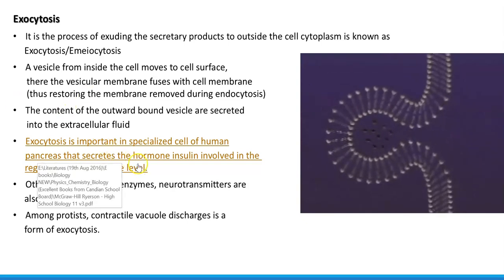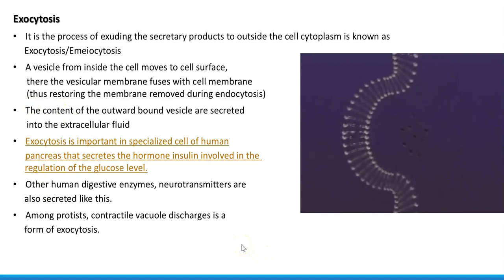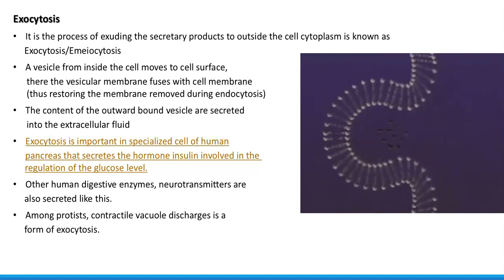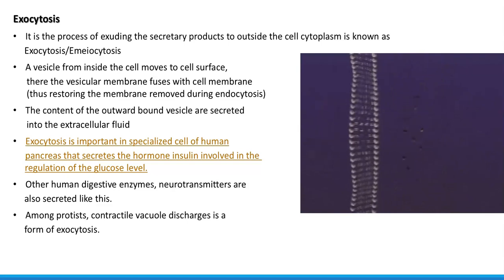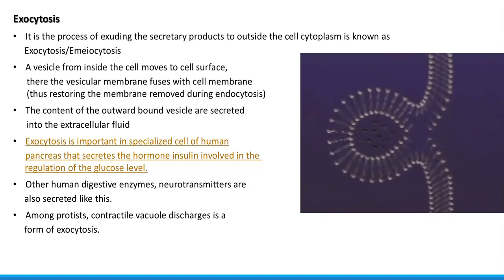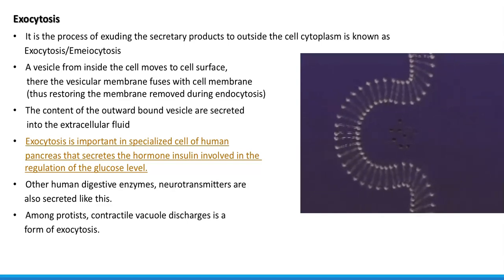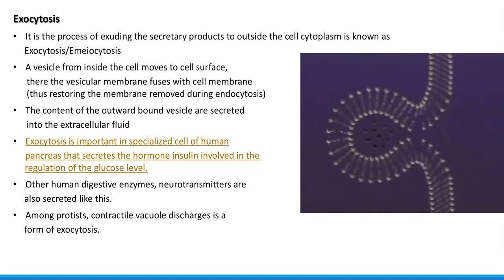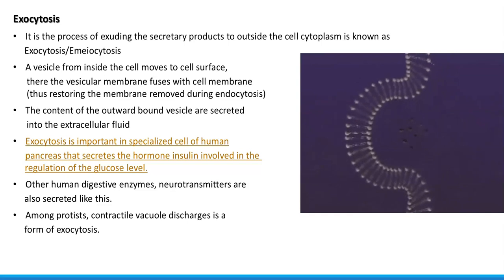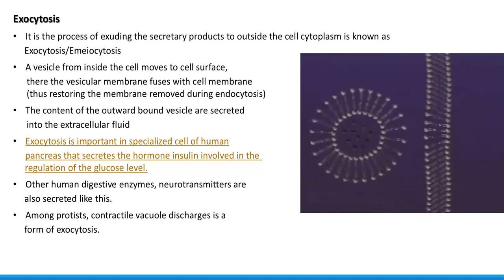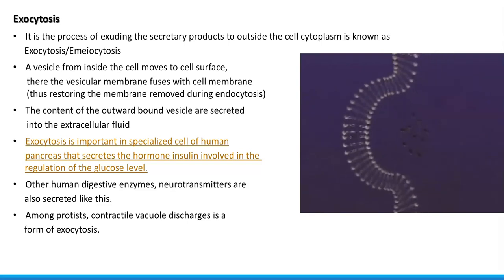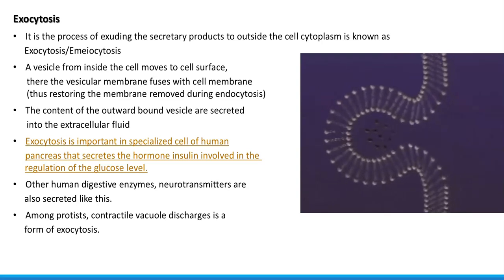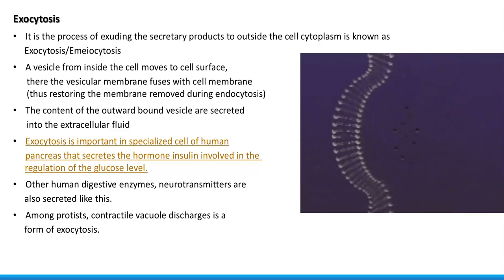Exocytosis is important in specialized cells of the human pancreas. The reason is that the pancreas is involved in the secretion of the human hormone insulin, which is very important to regulate the glucose level in the body. That insulin is secreted from the pancreas by the process of exocytosis. Other human digestive enzymes and neurotransmitters are also secreted through exocytosis. Among protists — that is protozoa — contractile vacuoles and secretions are all discharged into the outside environment with the help of the exocytosis process.